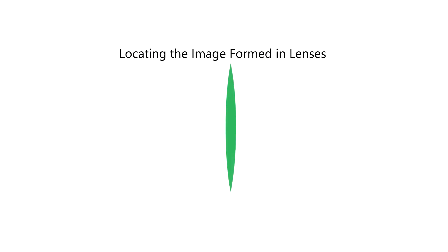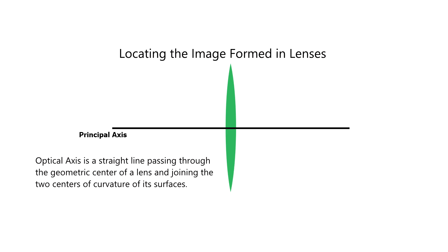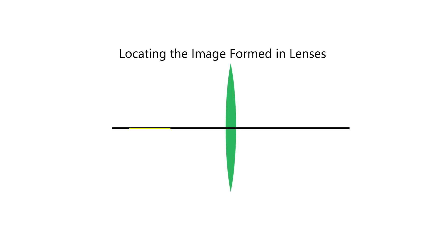In locating the image formed in lenses using ray diagrams, there are important parts we have to consider. The principal axis or the optical axis is a straight line passing through the geometric center of a lens and joining the two centers of curvature of its surfaces. Incident rays that pass through the optical axis are not refracted.